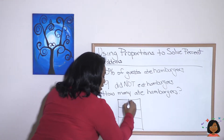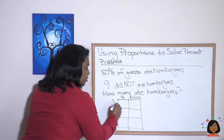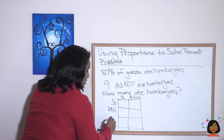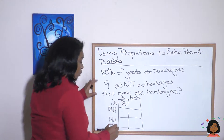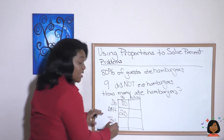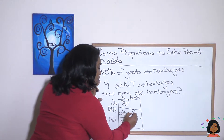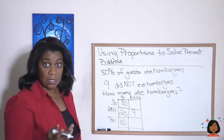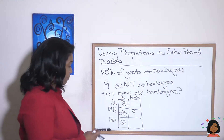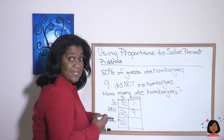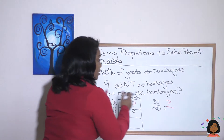We're drawing our box — remember it's got three rows. Percent on one column, actual on another. Rows are do, don't, and total. 80% ate hamburgers, so that goes in the do percent column, which means the don't column is 20% and total is always 100. Nine did not eat hamburgers, so nine goes in the actual don't column. Now we set up the proportion: 80 over 20 equals question mark over 9.